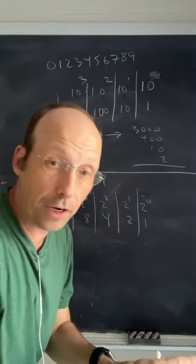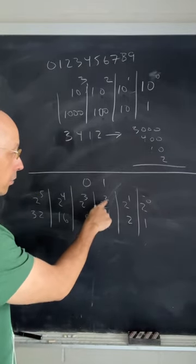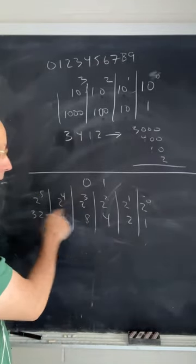So our place values are going to be 2 to the 0 is 1, 2 to the 1 is 2, 2 to the 2 is 4, 2 to the 3 is 8, and so forth.